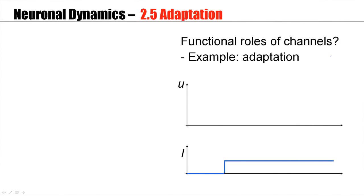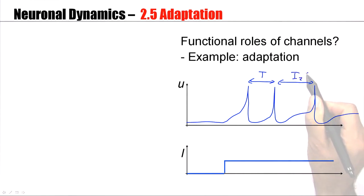Neurons adapt to constant current, to constant stimulation. So, suppose I have here a constant input current, then the neuron will probably fire a first spike, then a second spike, then a third spike, then a fourth spike, and adaptation means that the inter-spike intervals get longer and longer.